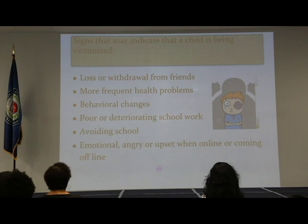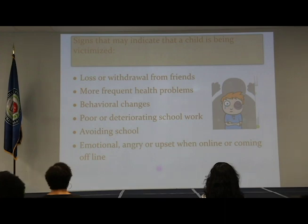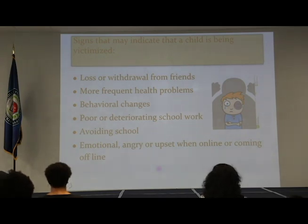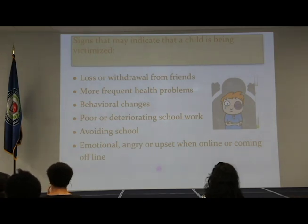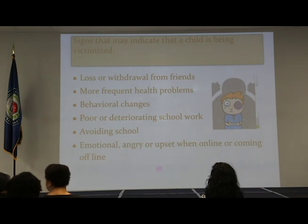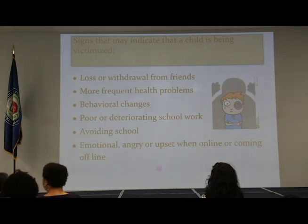Signs that may indicate a child is being victimized: loss or withdrawal from friends, more frequent health problems, behavioral changes, poor or deteriorating schoolwork, avoiding school, and being emotionally angry or upset when online or coming offline. If your kid stops doing things they normally enjoy — like soccer or karate — those are signs. A child being bullied may also act out or pretend to be sick just so they don't have to come to school.